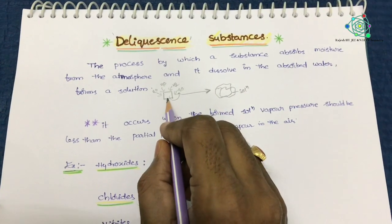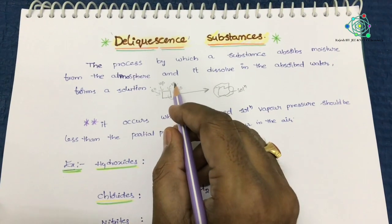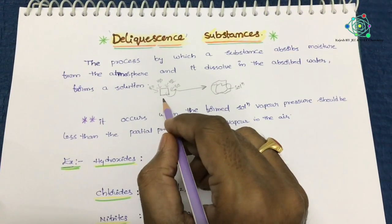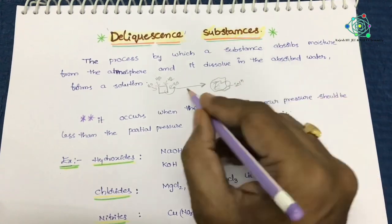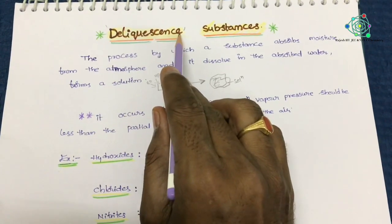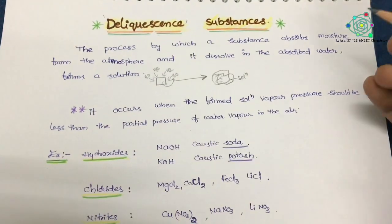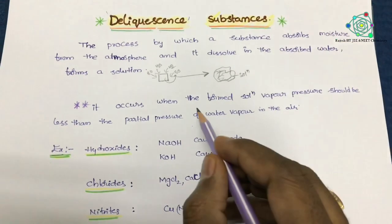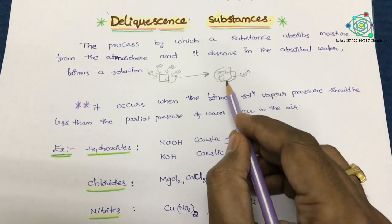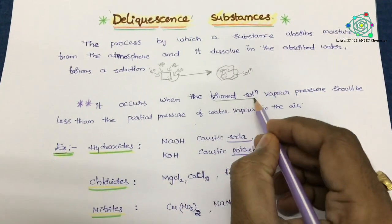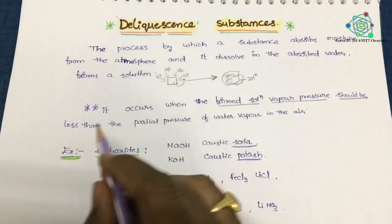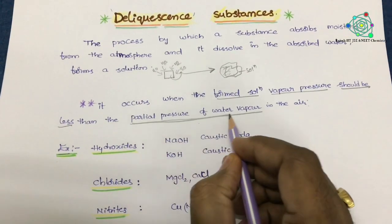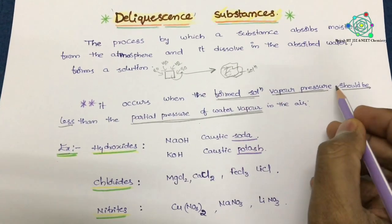That means if you take a substance, that substance whenever you expose it to the atmosphere, it absorbs the moisture which is present in the atmosphere, and this substance dissolves in the absorbed water and forms a solution. This whole process we call deliquescence. Now, not all substances show deliquescence — there is a condition. The formed solution's vapor pressure should be less than the partial pressure of water vapor which is in the air. Only in this condition can you notice deliquescence.